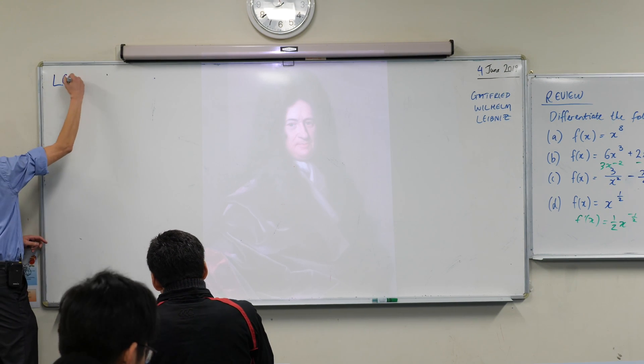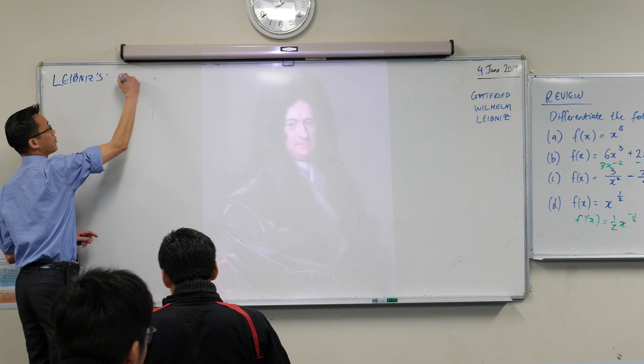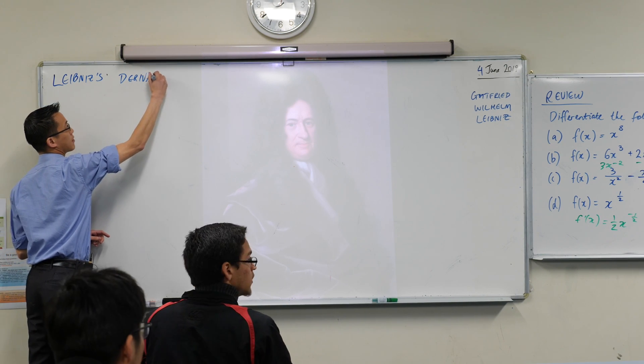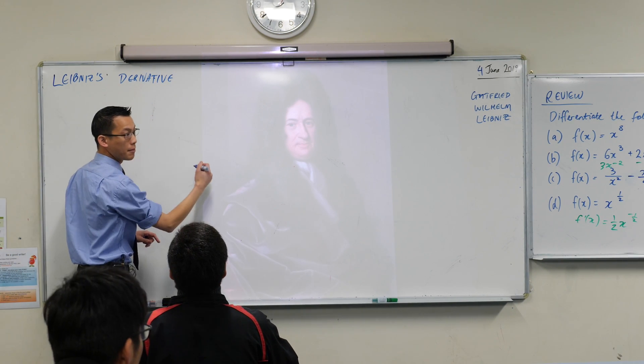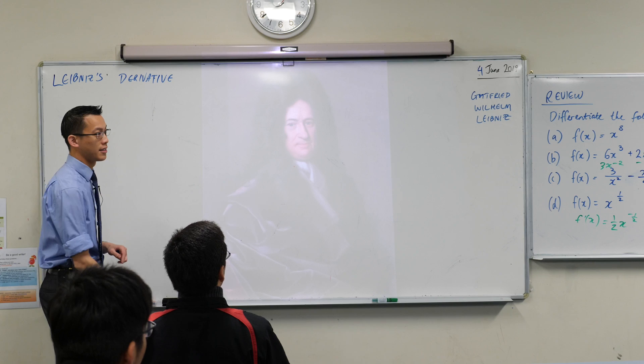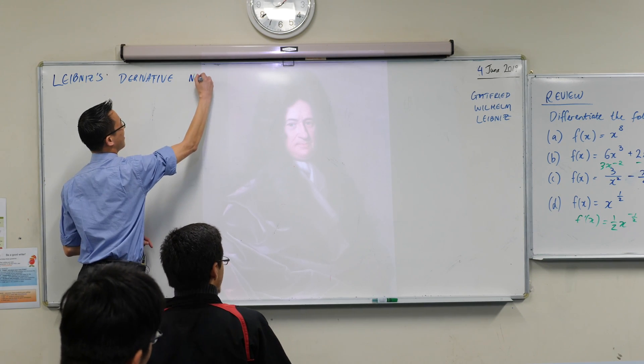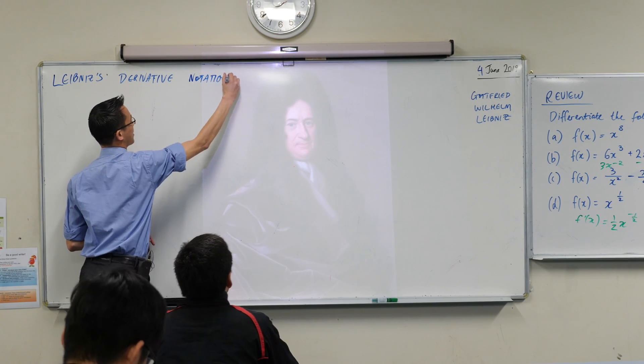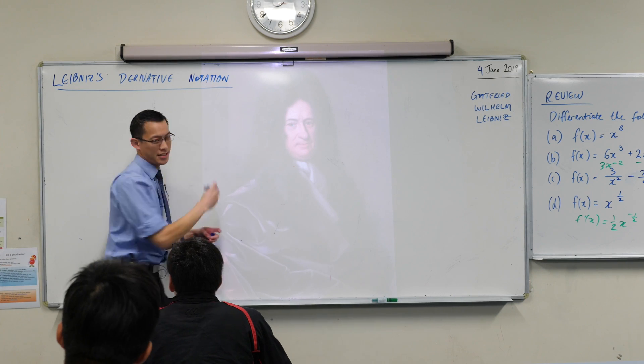So you can make a little heading for me which is Leibniz's derivative notation. Say it again today. Is his name Gottfried? Gottfried. He's definitely German or Austrian. Oh yes. All the great mathematicians at that time were.